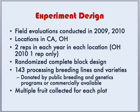Let's begin by discussing the experimental design. Field evaluations were conducted in 2009 and 2010, with locations in Davis, California, as well as in Ohio. There were two reps in each year in each location; however, in Ohio 2010 there was only one rep. The germplasm was planted in a randomized complete block design and there were 143 processing breeding lines and varieties, all donated to the SolCAP project by public breeding and genetics programs or were commercially available.